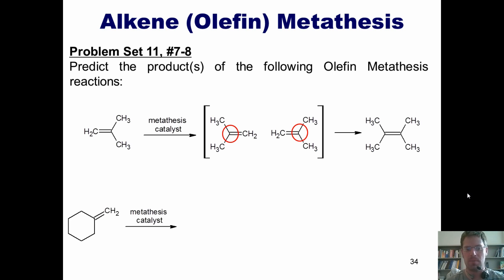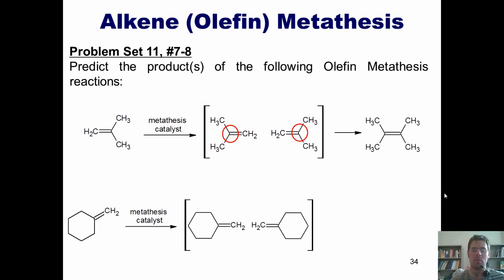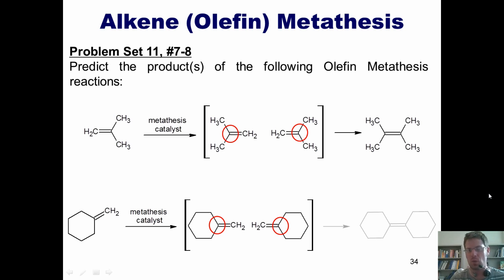Here's our second example. Once again, I draw two molecules of the starting material facing each other. I'm going to circle my two internal carbons, and I'm going to remember that this reaction forms a carbon-carbon double bond between those two. These two external carbons, the two CH2s, will once again be double bonded to each other and release as ethylene gas. That ultimately gives rise to this type of product here.